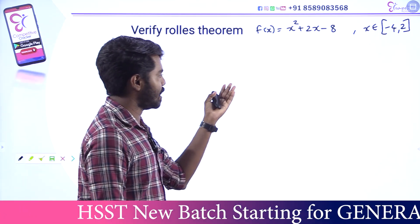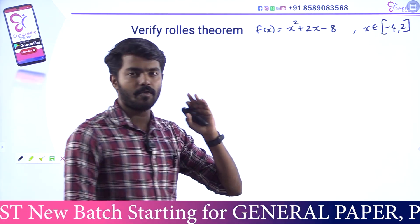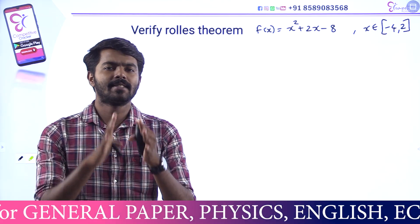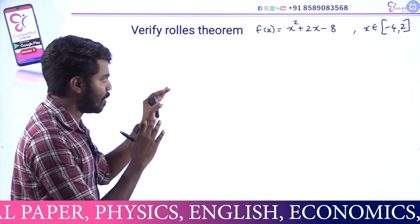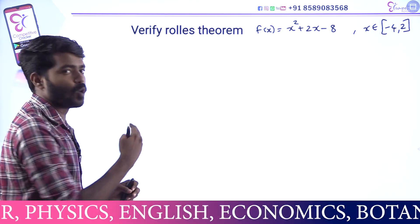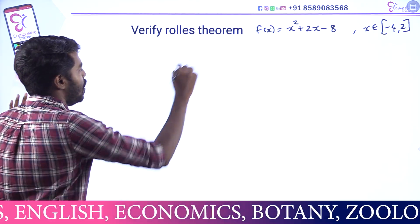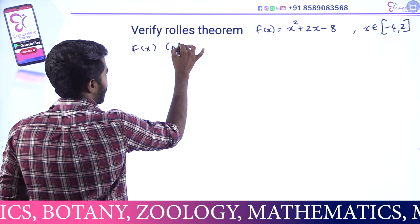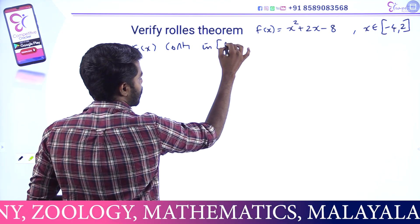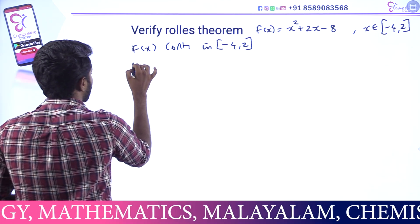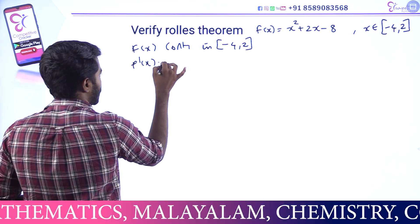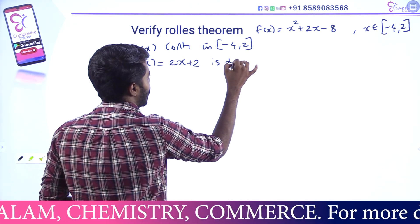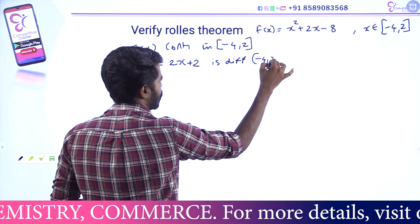Now a problem: verify Rolle's Theorem for F of X equal to X squared plus 2X minus 8 on the closed interval [-4, 2]. Let me tell you how to verify Rolle's Theorem. First of all, we can say that the function is continuous in closed interval [-4, 2]. Also, F' of X is differentiable at open interval (-4, 2).